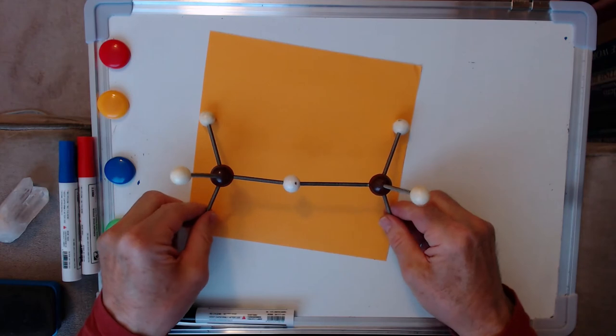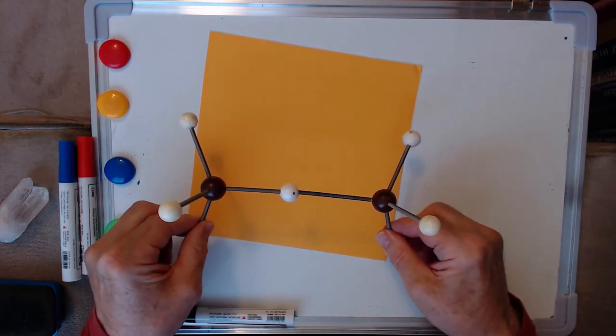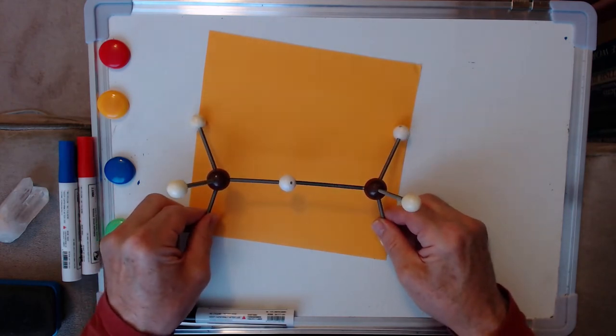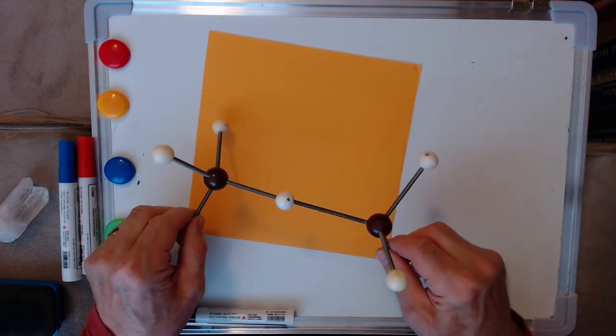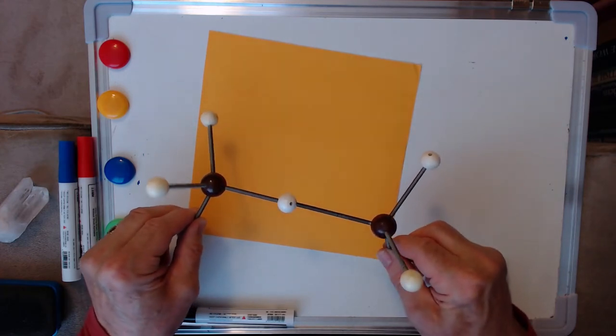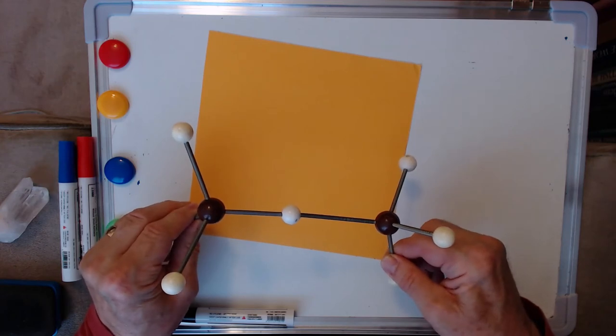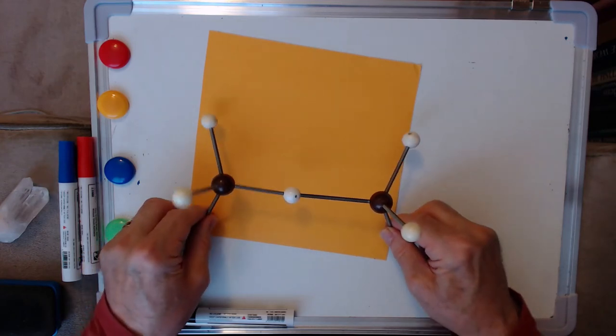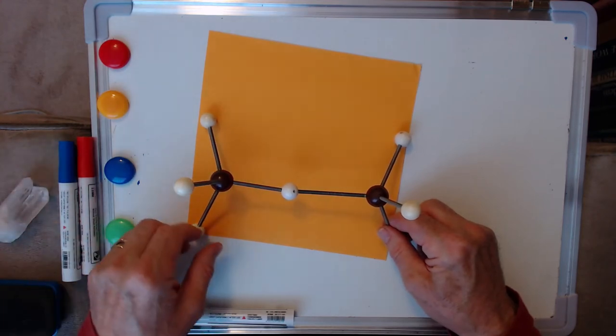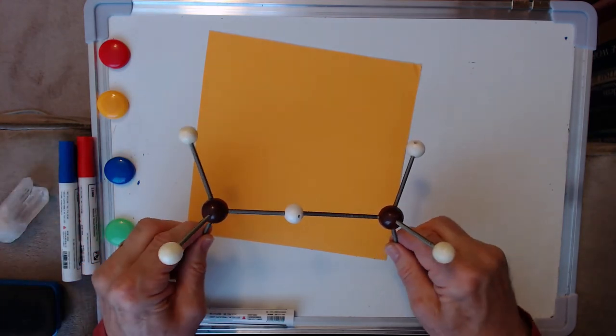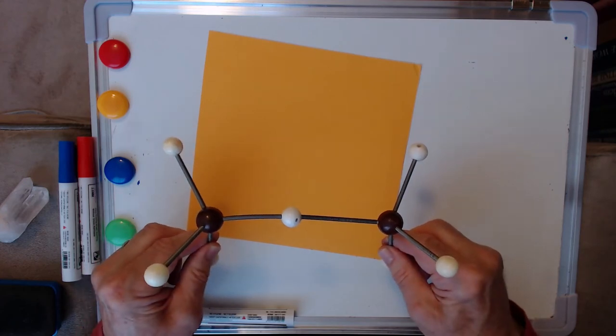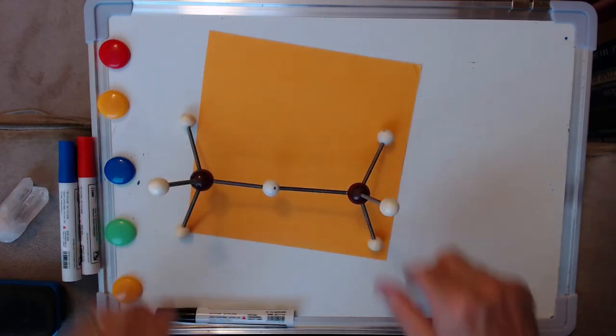And actually this, if we let it become amorphous, is not then quartz, it would actually be a silica glass. So all we've done to move from quartz to a glass is actually allow these small changes in our arrangement of groups of atoms.